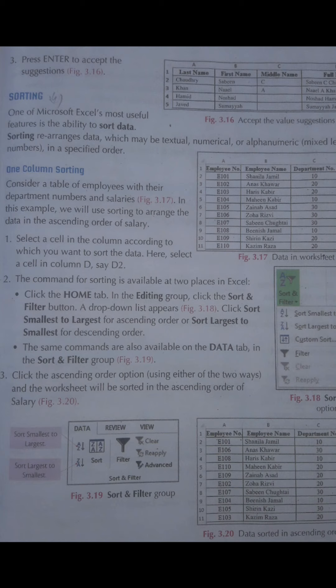Select کرنے کے بعد sorting apply کرنے کے steps میں سب سے پہلے Home tab پہ click کریں گے تو ایک Editing group appear ہوگا، جس کے اندر Sort and Filter button ہوگا۔ جب اس پر click کریں گے تو ایک drop-down menu appear ہوگی — یعنی نیچے کی طرف list، جیسا کہ figure number 3.18 میں دیکھ سکتے ہیں۔ اس میں لکھا ہے Sort Smallest to Largest — یعنی ascending order۔